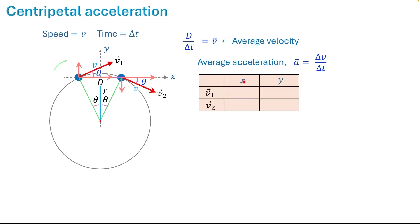Now, let us make a table and put the x and y components of v1 and v2. The x component of v1 is v times cosine theta and the y component of v1 is v times sine theta. The x component of v2 is v times cosine theta and the y component is negative v times sine theta.